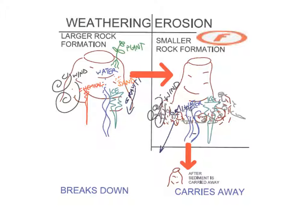Weathering, as you can see here on the left — when we begin with a larger rock formation, say a mountain or canyons, in this case a hill, there are different elements and forces that can cause the surface of that rock to change. For example, wind, water, ice, and sand can beat against the hill or the canyon or the mountain or any other kind of land formation and weather it down or break it down.